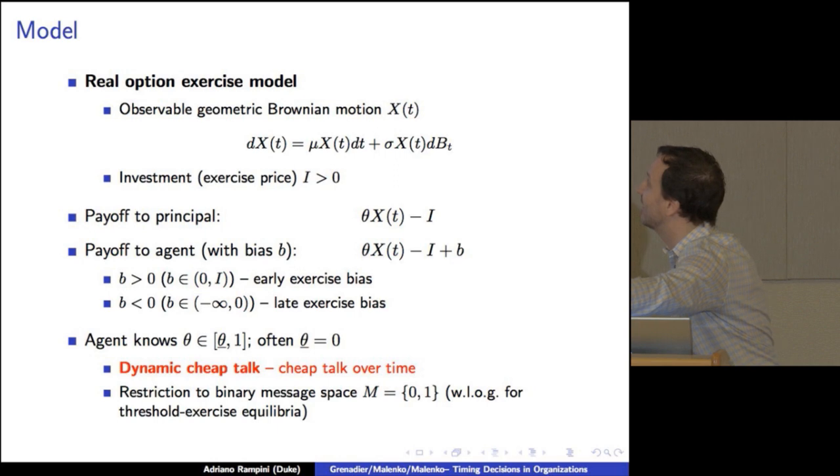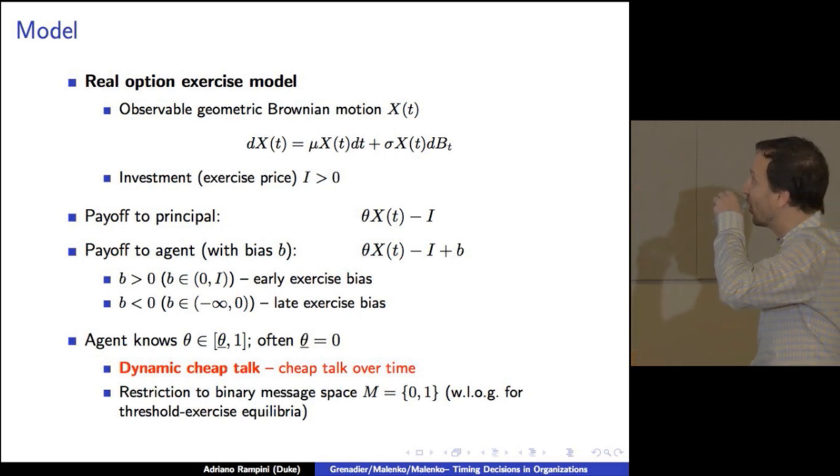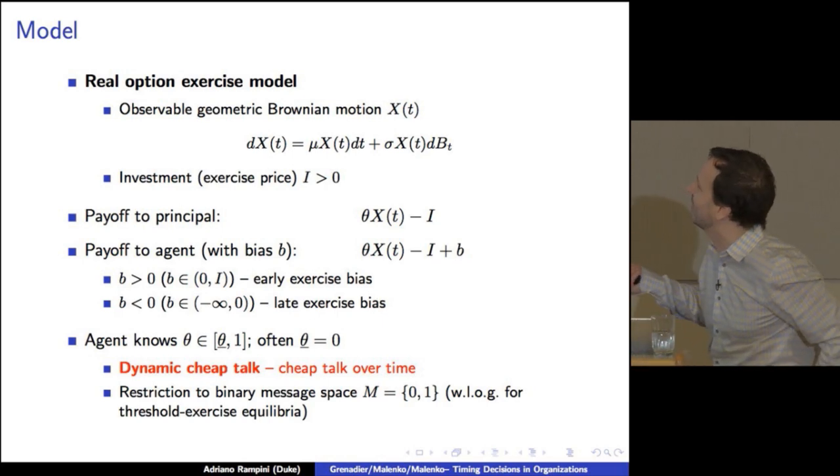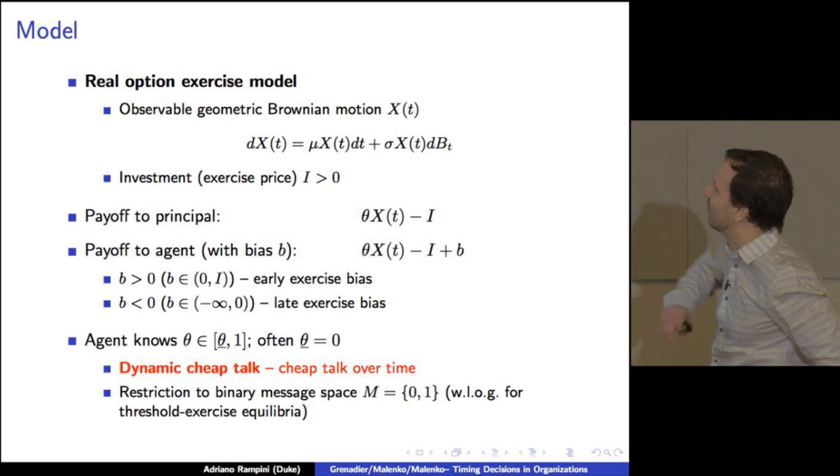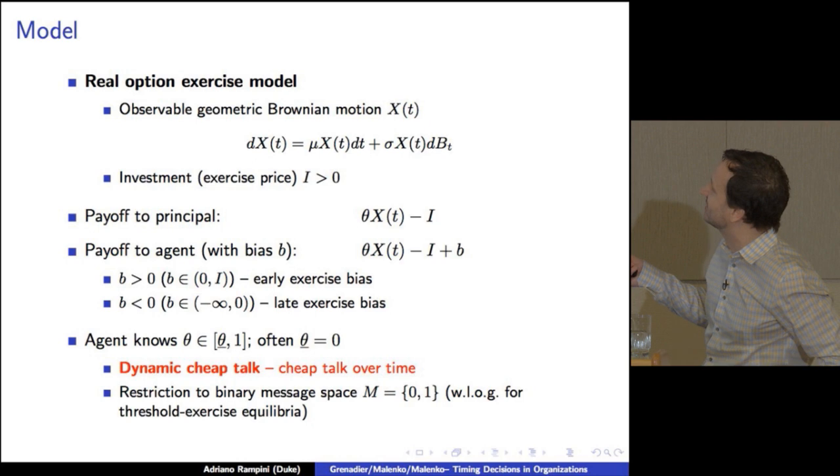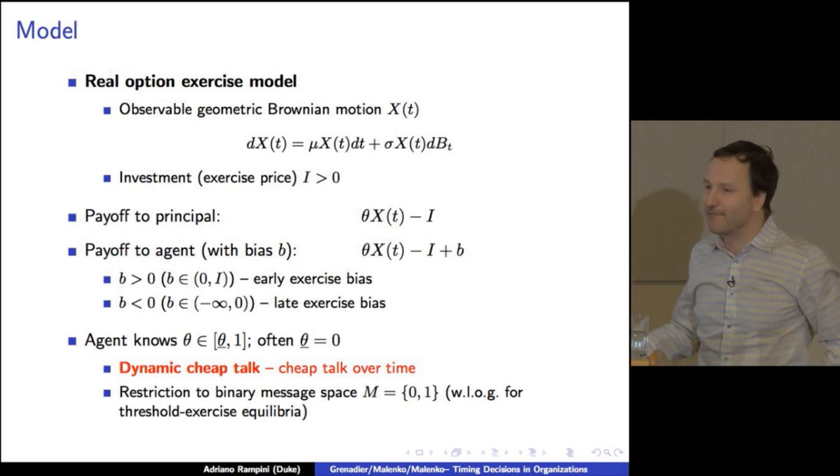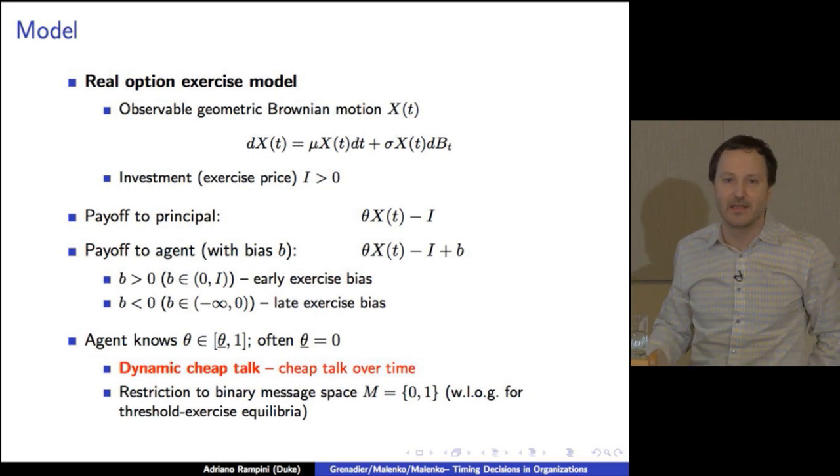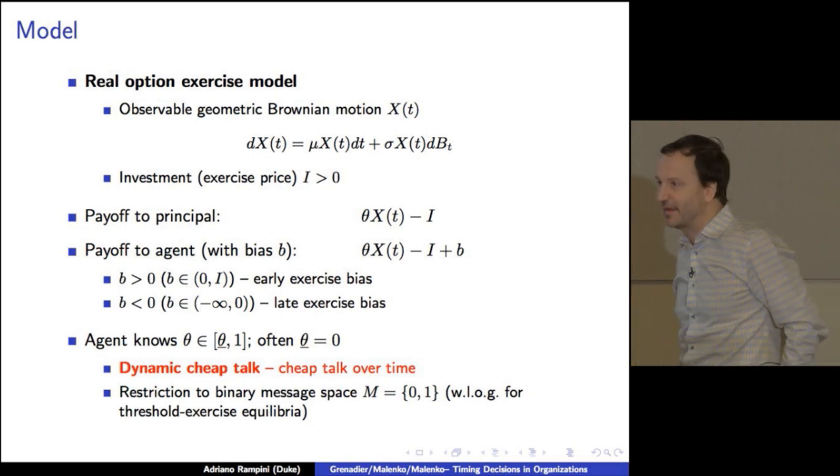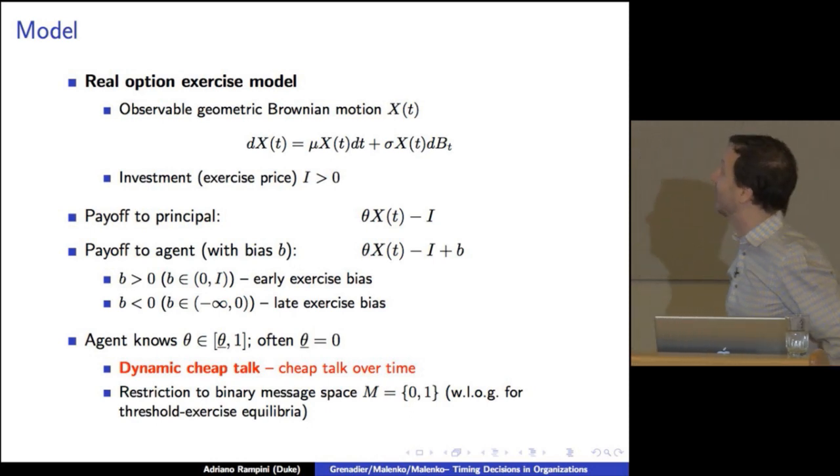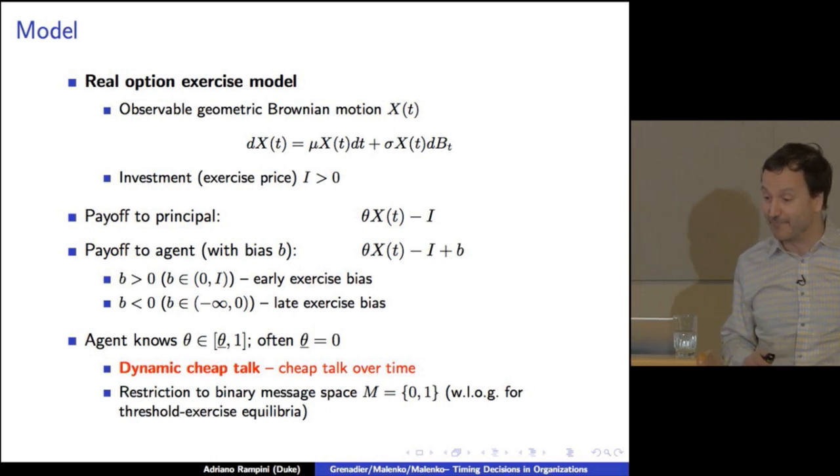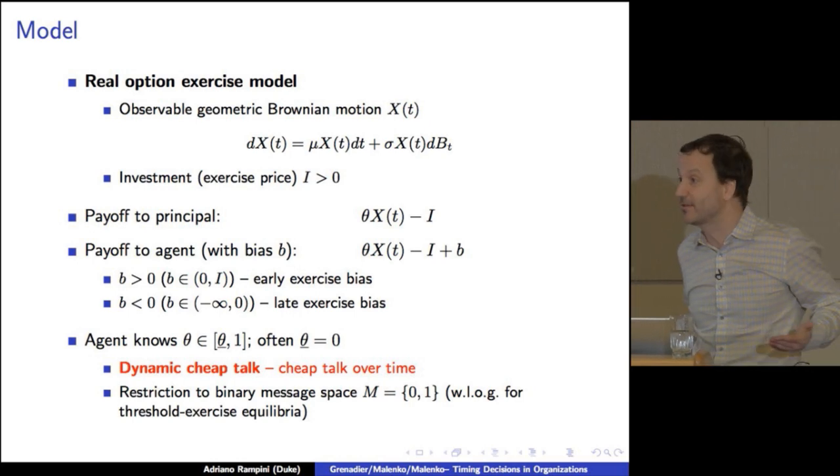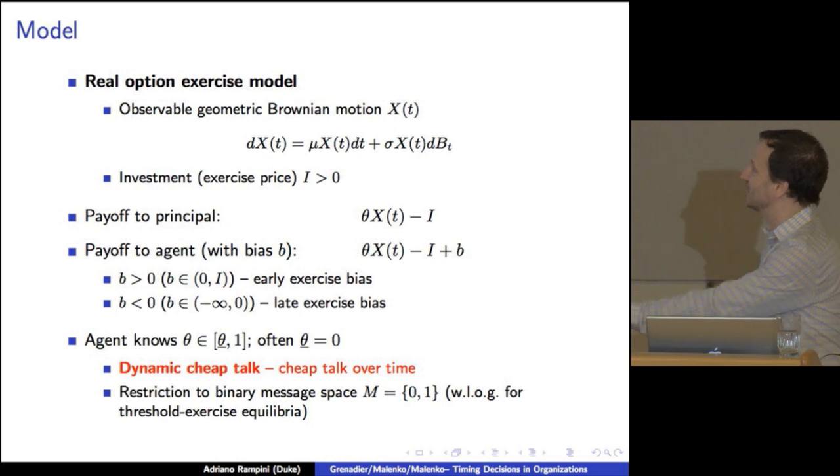All right. The paper here, the model here, is a real option exercise problem. And it's very nicely done. Essentially, the model fits on one slide, so there's this observable Brownian motion that evolves, and we can at some point exercise the option at some cost i. Think of it as investment. If we exercise, the principal gets theta X(t) minus i. The trouble with the agent is that he gets the same payoff plus b, which is how much does he like to exercise. b-positive means the agent likes exercising, so he has a preference for early exercise. b-negative means the agent doesn't like to exercise, and so prefers late exercise.